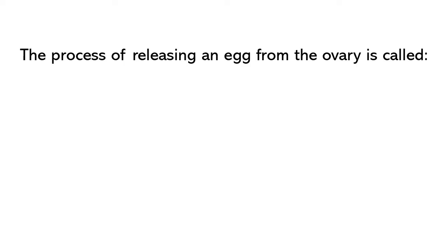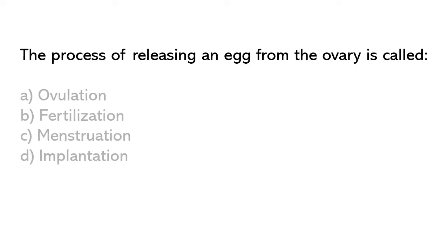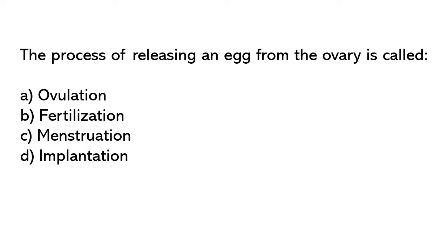The process of releasing an egg from the ovary is called: A) Ovulation, B) Fertilization, C) Menstruation, D) Implantation. So the correct answer is option A. Ovulation.